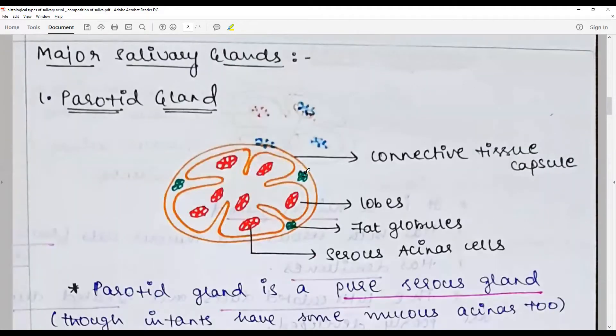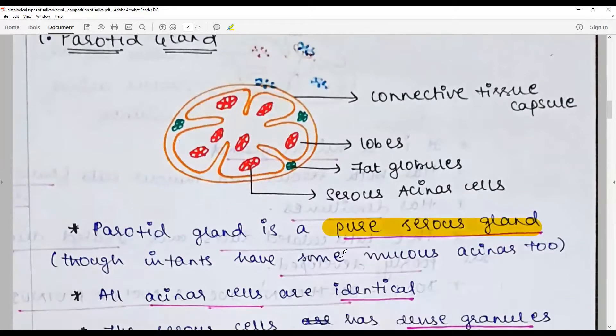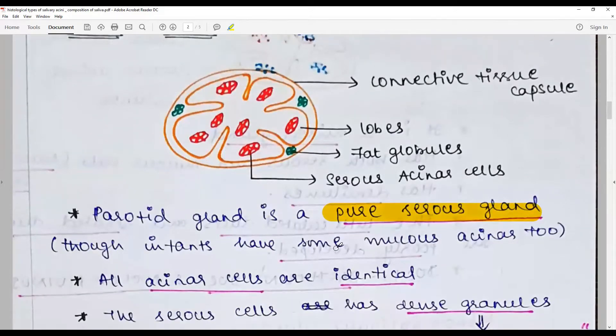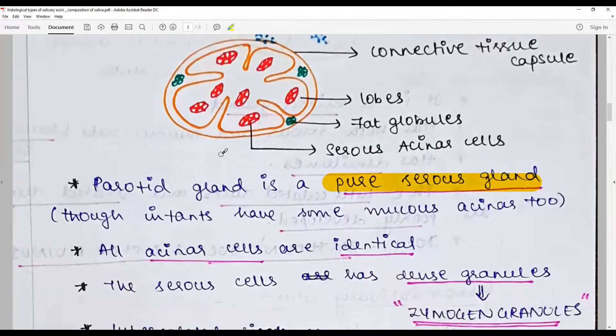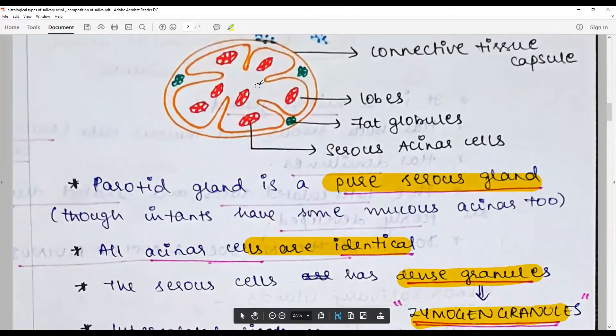The major salivary glands - going into the parotid acinus: parotid gland is a pure serous acinus gland. In infants they may have some mucous acinus. All acinar cells are uniform and identical. The serous cells have dense granules in its apex called zymogen granules.